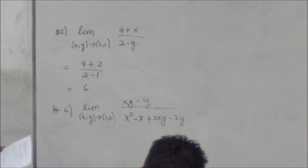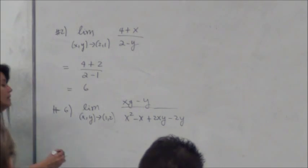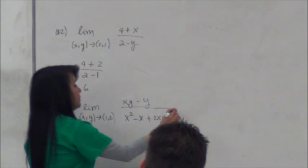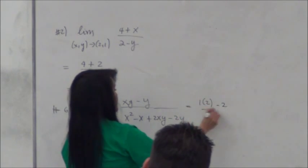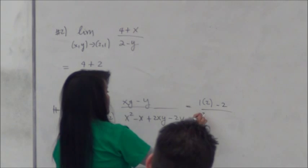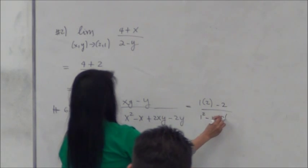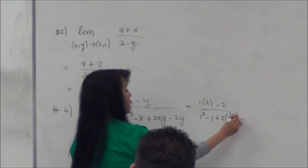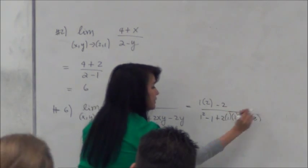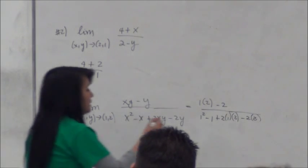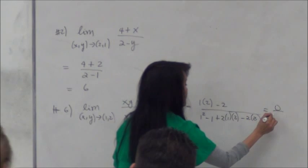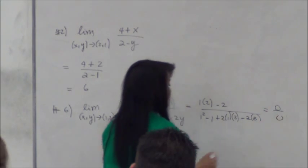So again, what do we do? Hopefully I'll copy that right. So what do we do first? We substitute. Now when you substitute, you'll get 1 times 2 minus 2 all over 1 squared minus 1 plus 2 times 1 times 2 minus 2 times 2. What's going to happen to that? Zero. Zero on top and zero below.